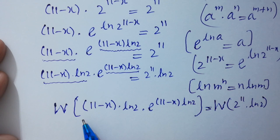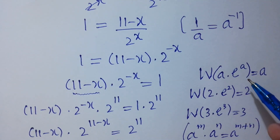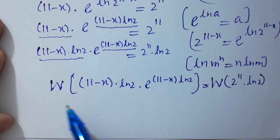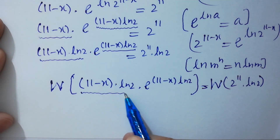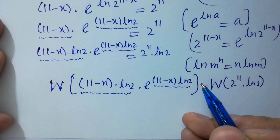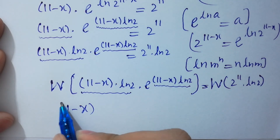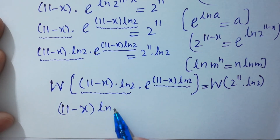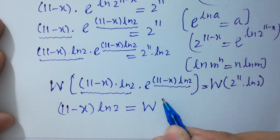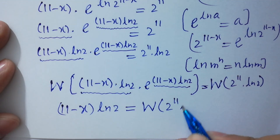Since W(a·e^a) equals a, we get (11 minus x)·ln 2 equal to W(2^11·ln 2). In the next step, since 11 equals 3 plus 8, we can write 2^11 as 2^3 times 2^8. So: (11 minus x)·ln 2 equal to W(2^3·ln 2 · 2^8).